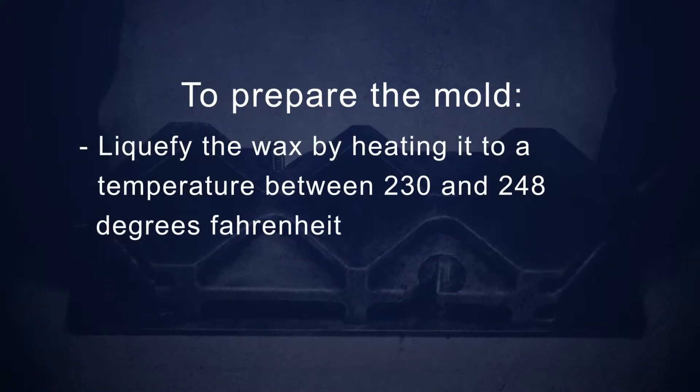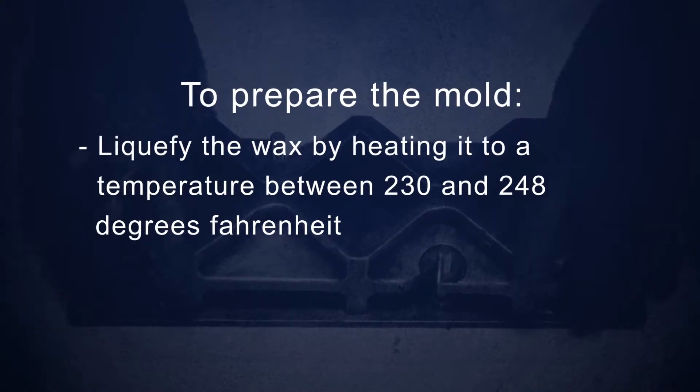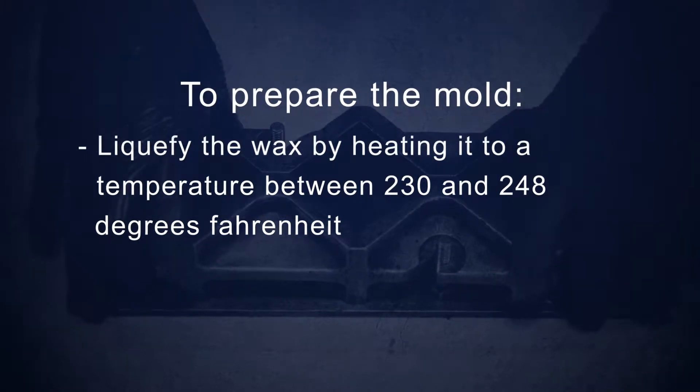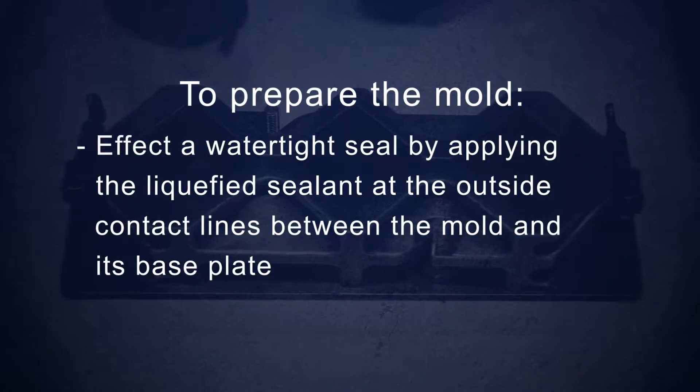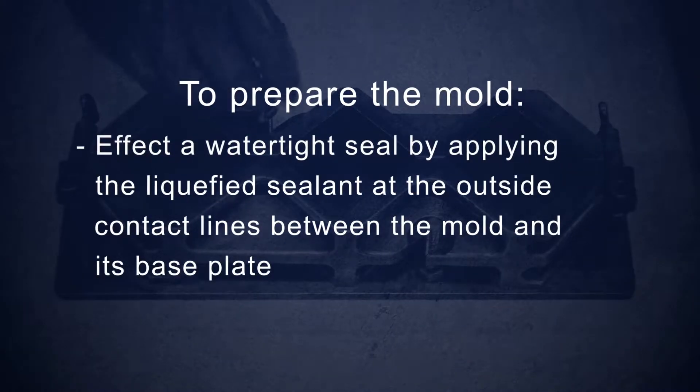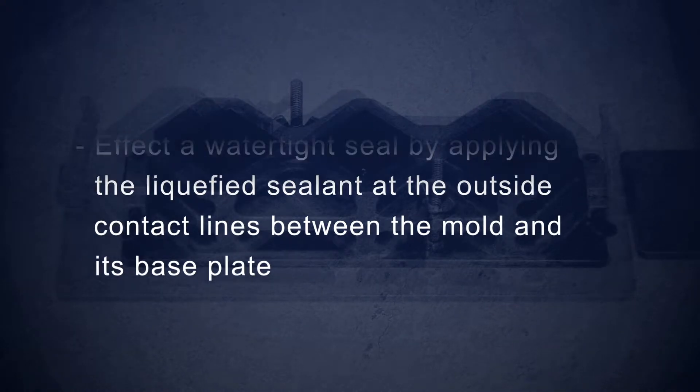Liquefy the wax by heating it to a temperature between 230 and 248 degrees Fahrenheit. Affect a water-tight seal by applying the liquefied sealant at the outside contact lines between the mold and its base plate.